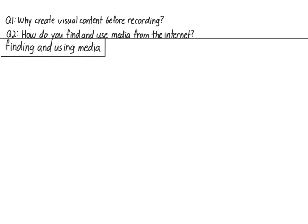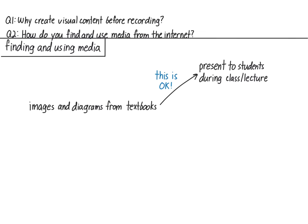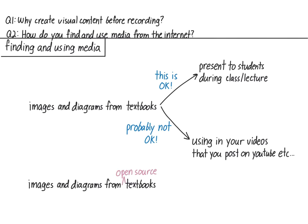Before I show you how to find media online, a few caveats. If you're just using images and diagrams from your class textbook and only using them to teach the students in your class, there's no need to worry about licensing — you can just use them. But if you want to post your videos on YouTube or anywhere else online, using media from your textbook is probably a bad idea, since most textbook media is under very restrictive licenses and using it in a public video without permission could be a copyright violation. However, there are open-source textbooks that only use open-source media, so anything in those is probably okay. Check the licenses on each piece of media you use.